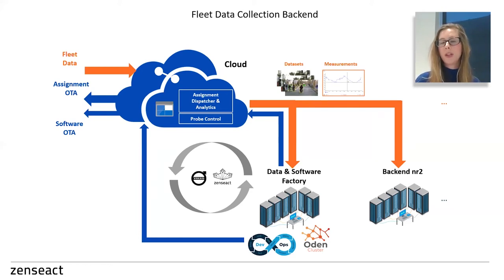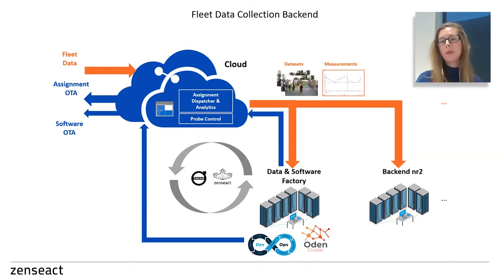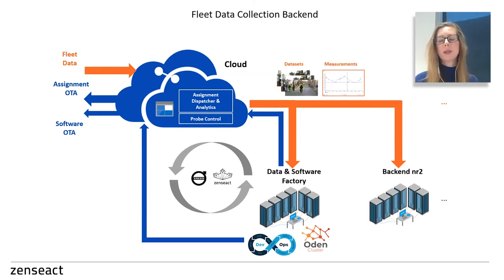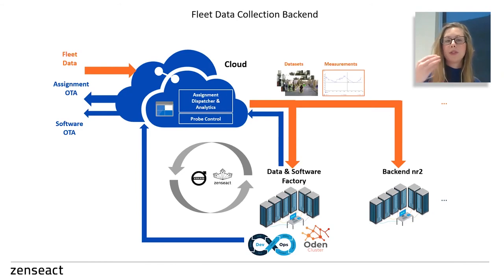Regarding the over-the-air capability: we need to be able to upgrade the system in the car and continue to deploy assignments to the fleet. The main difference between an assignment OTA update and a software OTA update is that the assignment OTA update is a passive online analytics script running in the car to evaluate fleet health. A software update can actually activate the vehicle — so the process for enabling these two is a bit different.